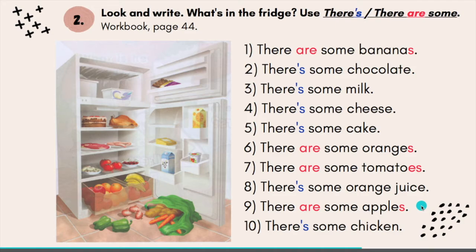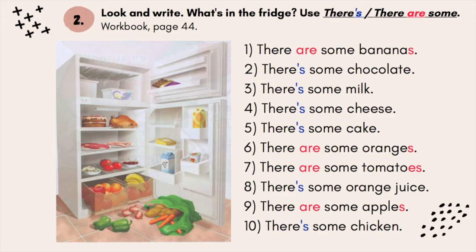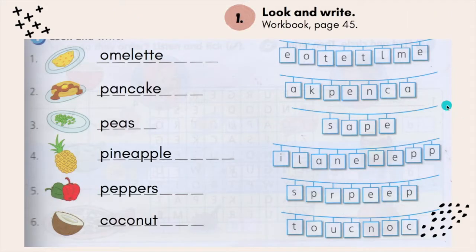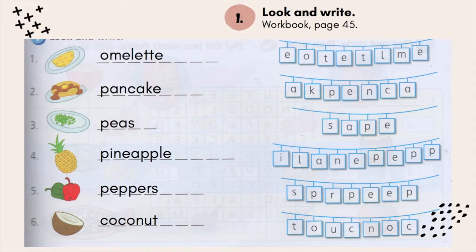It is okay if the arrangement of the sentences is not the same as mine — if you have the correct sentence, just tick it and I will accept it. Now let's move on to workbook page 45. The instruction says look and write, so you need to spell correctly. Number 1: omelette — O-M-E-L-E-T-T-E.